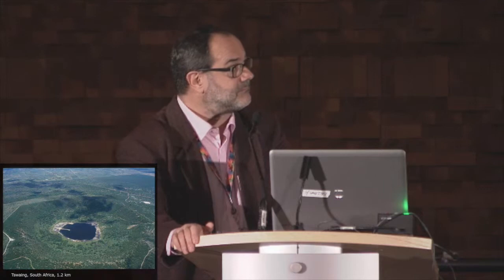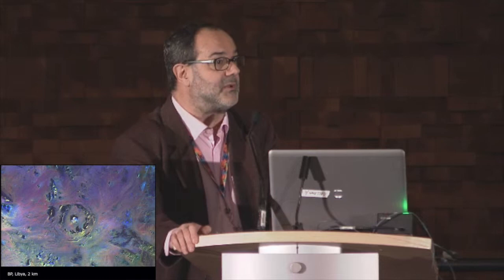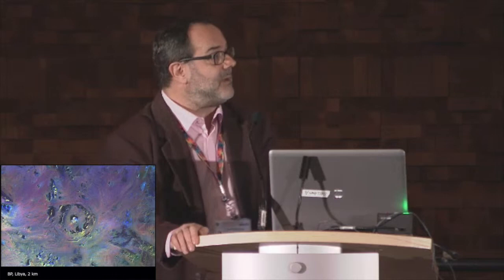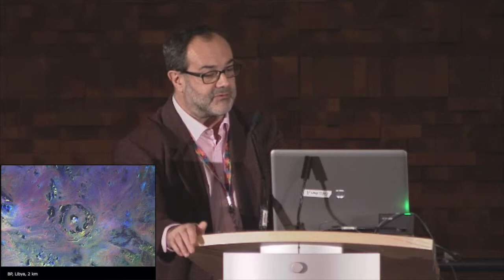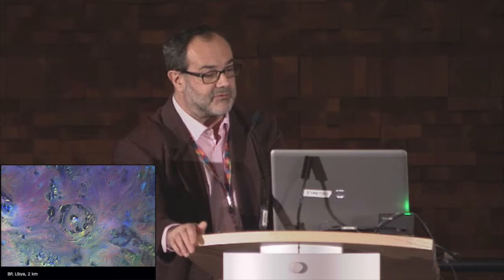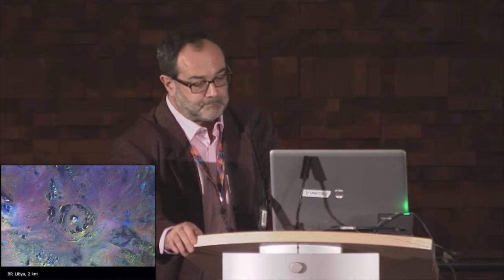Another one, younger than about 60 million years, is the BP structure in Libya, about 2 kilometers in diameter. You can already see that erosion has taken a toll. This used to be a complex impact structure — meaning it doesn't have only a bowl shape, but has a central feature like a central uplift or central peak. We have lost several hundred meters at least due to erosion.